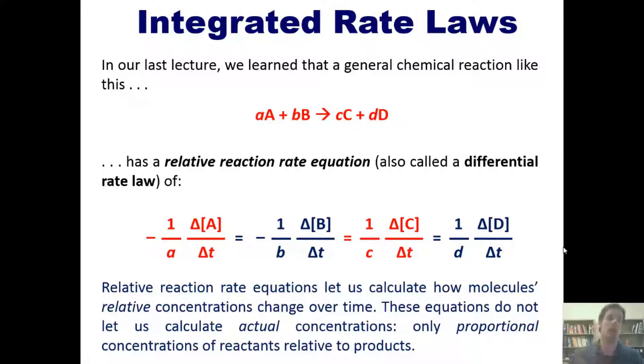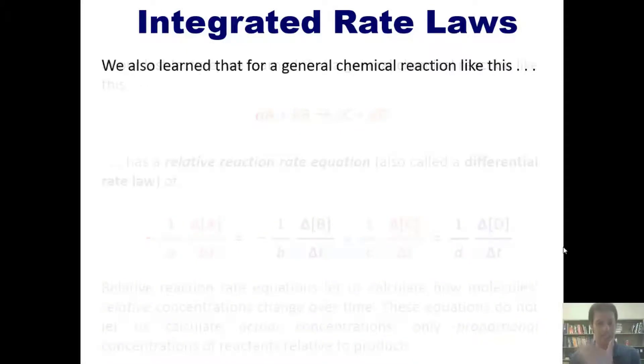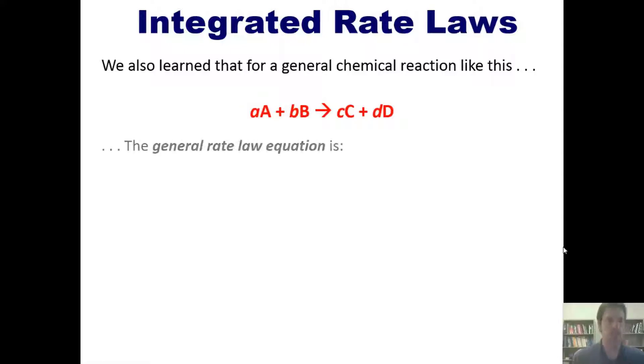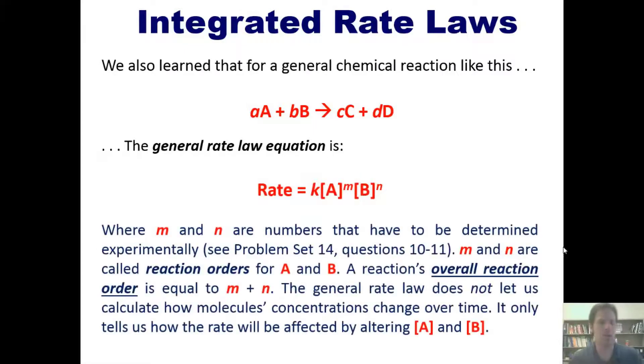Okay, so in an earlier lecture, to which I'll post a link right here, we also learned that for a general chemical reaction, such as this one, the general rate law equation, which is a little bit different from the relative rate equation, is this, where m and n are numbers that have to be determined experimentally.